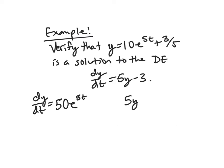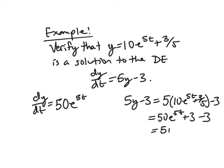Then we look at 5y - 3. So if you see 5y, well, we should be plugging in that y above. So 5 times (10e^(5t) + 3/5) - 3. Go ahead and distribute. We get 50e^(5t) + 3 - 3. And so, lo and behold, we get the same thing either way, and this means we have indeed verified. This is equal to this, so it satisfies that equation. Thus, this y is a solution to the differential equation.